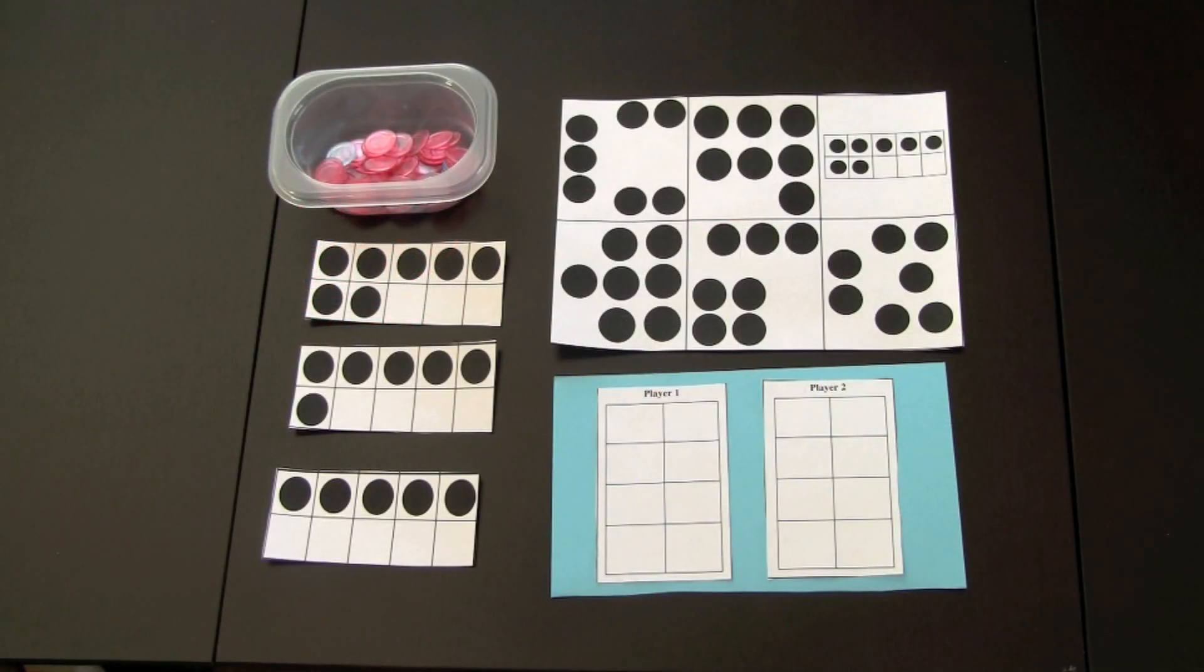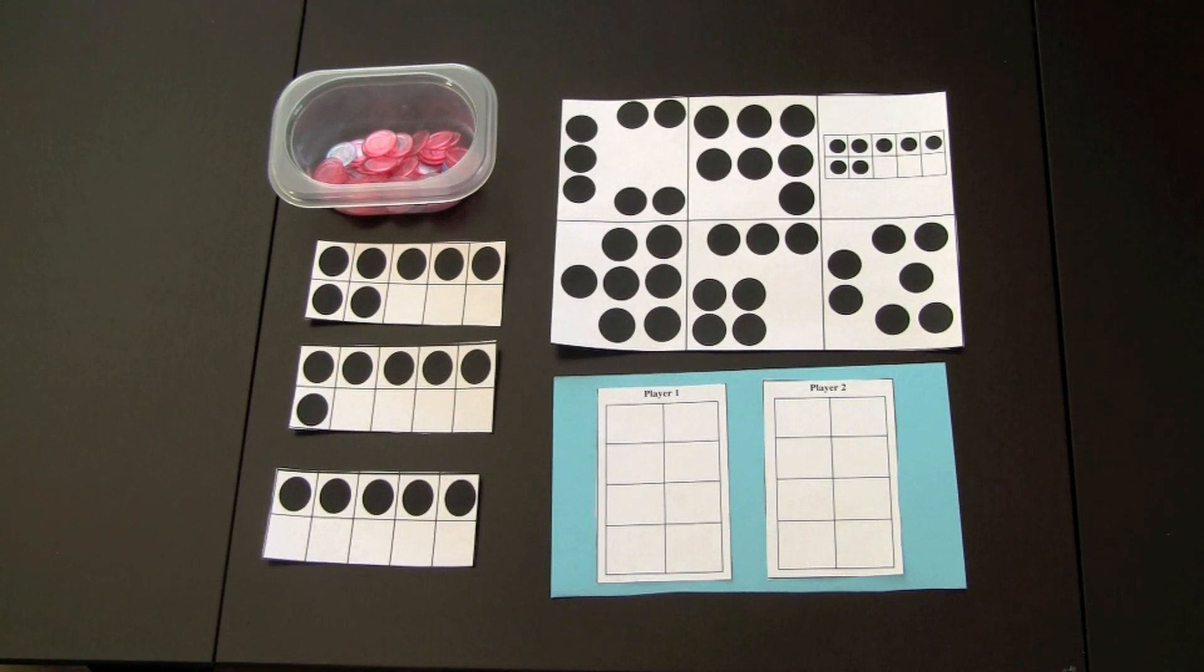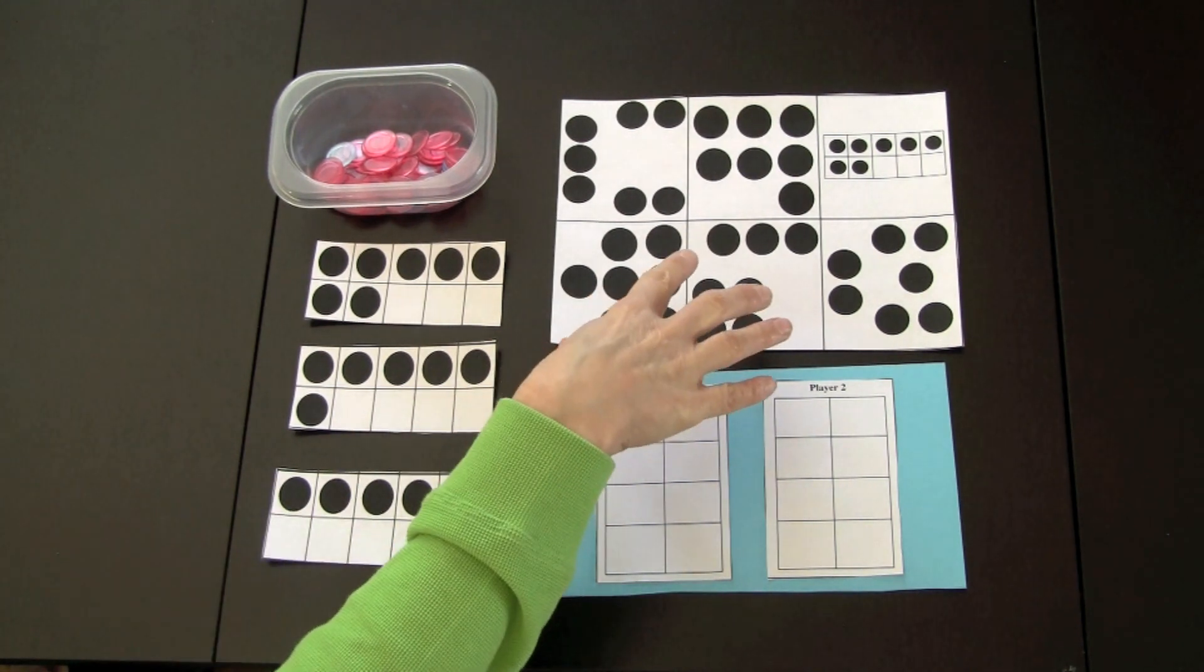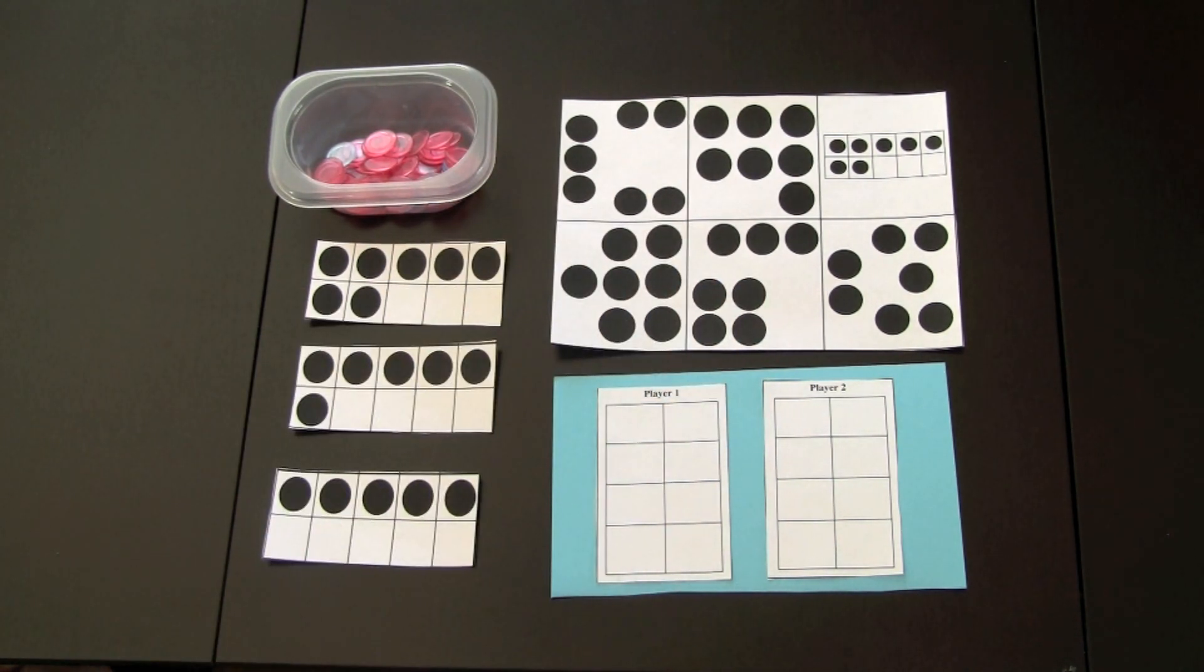In the program you will find mini dot cards and ten frame cards. These are great to use for games. For example, if the focus is on number seven, all the dot cards with number seven and ten frame would be put together along with others.